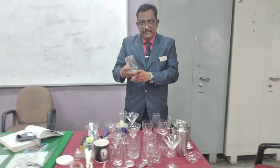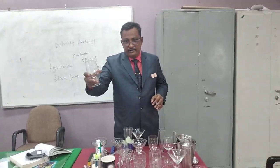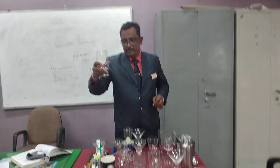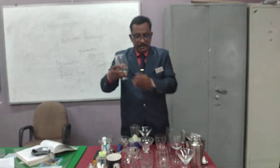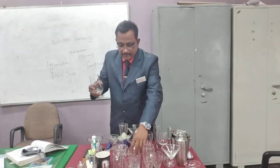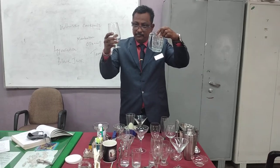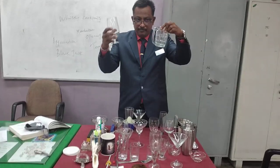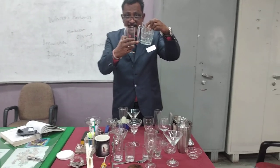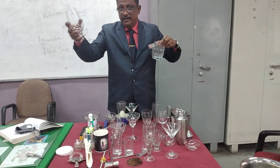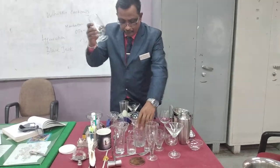This is a beer goblet, where only beer can be served. Here is the beer mug — in both cases you can serve beer. The beer mug has a handle, while the beer goblet has a short stem. Both are used for serving beer.